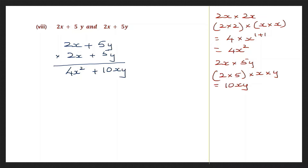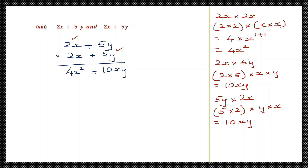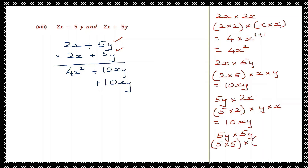Now let's multiply plus 5y into 2x: 5y into 2x — numbers are 5 twos — and y into x — 5 twos are 10, putting in order xy — so 10xy in the xy column. Now we multiply 5y into 5y: numbers are 5 into 5 and y into y — 5 fives are 25 — into y to the power of 1 plus 1, which is 25y squared. Let's write separately: plus 25y squared.